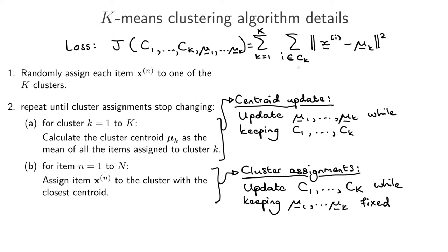In step 2a, instead of keeping the mu's fixed we update the mu's while keeping the cluster assignments fixed — we don't change which cluster each x belongs to, just the mu for each cluster. When we update the mu's, we move them to the mean of all points in the cluster, so on average the centroid should be closer to the average point in that cluster. Therefore step 2a is also guaranteed to make the loss go down, and so every update step — whether 2a or 2b — makes the loss decrease.